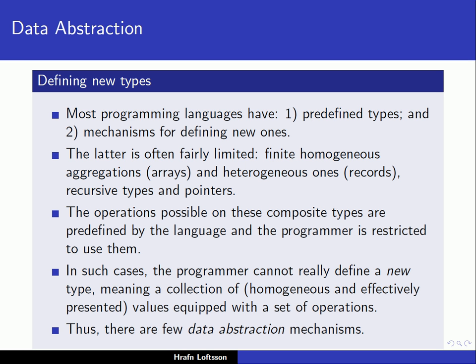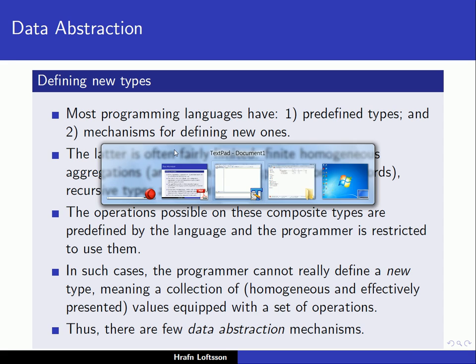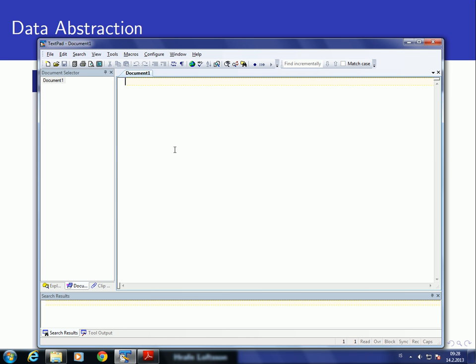In some programming languages, this latter possibility — defining new types — is fairly limited. We can use arrays, we can use records or structs, we can use recursive types and pointers. For example, let's look at structs, using C or C++ syntax.